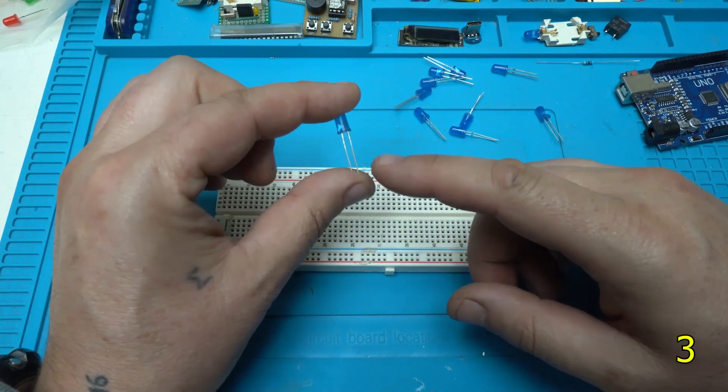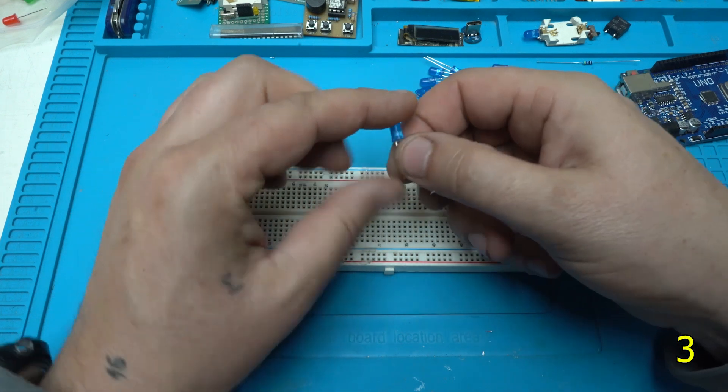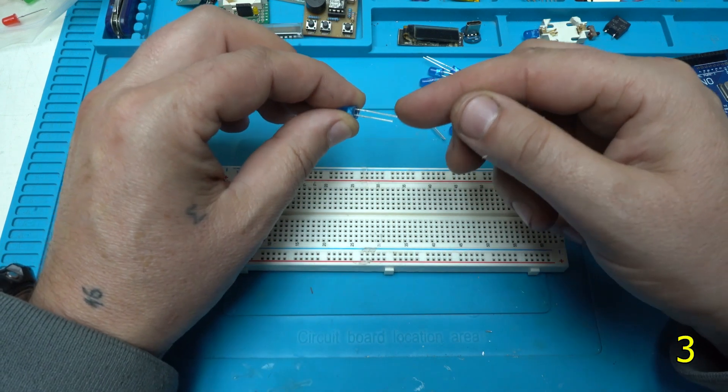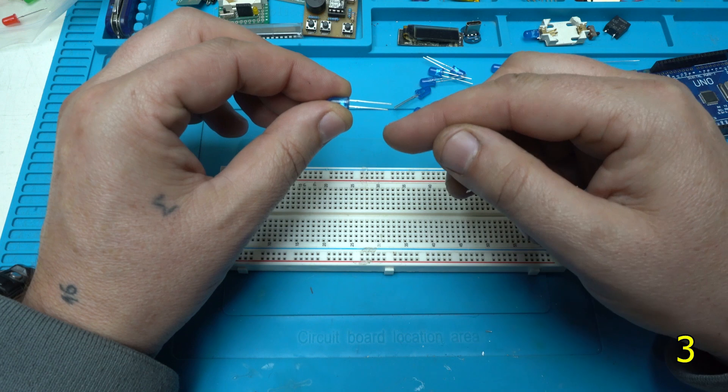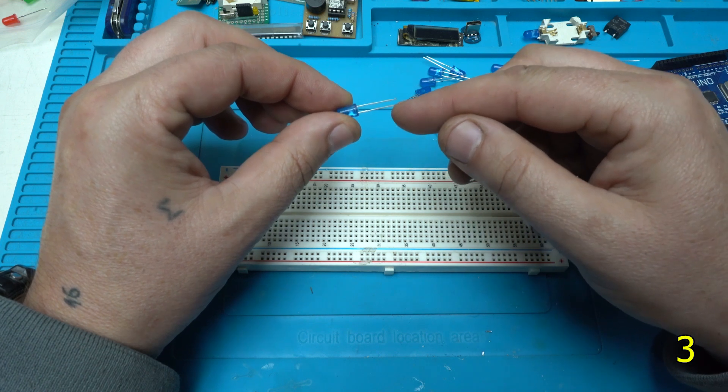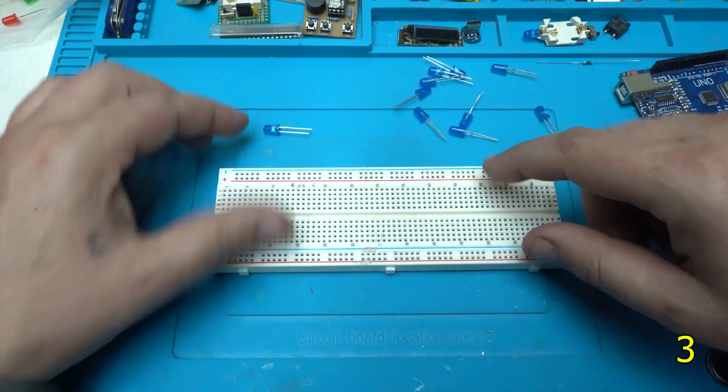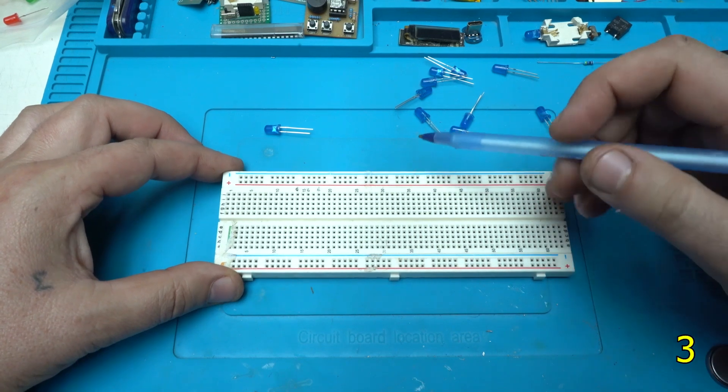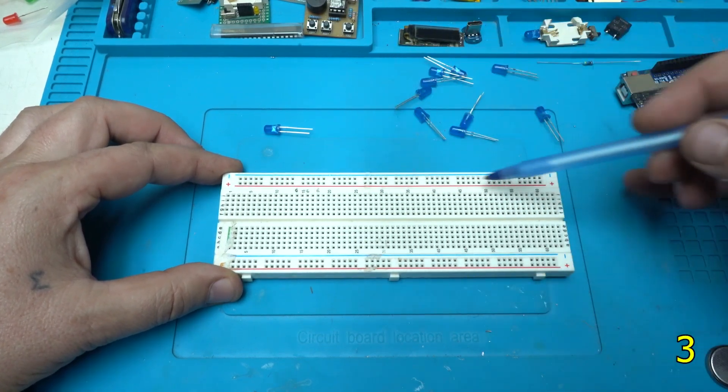Something to be clear, each LED has two legs. One of them is positive, the other one is negative. And also on this breadboard we have a negative and positive.